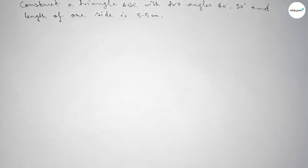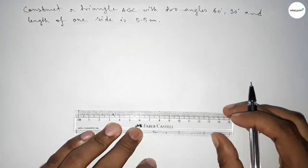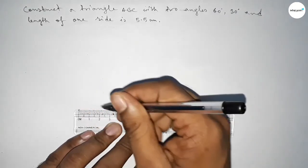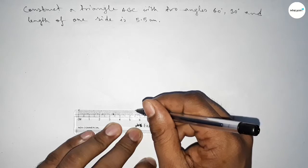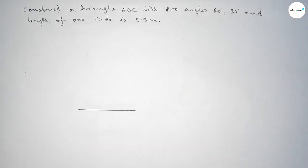Let's start the video. First of all, we have to draw here a line of length 5.5 centimeters. This is a 5.5 centimeter line, taking here point B and here C. Now we have to draw a 60 degree angle on point B.